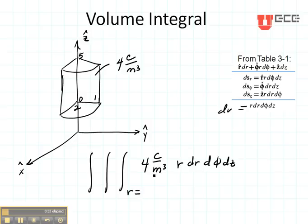R would go from zero to one. See right here is my radius, zero to one. Phi would go from phi equals zero to phi equals pi by four.